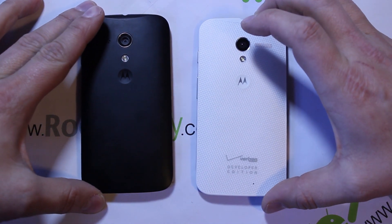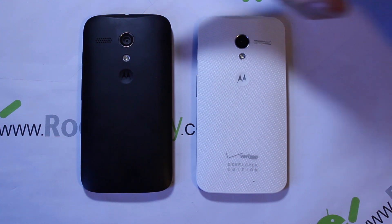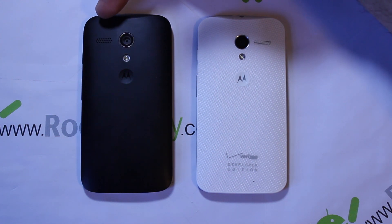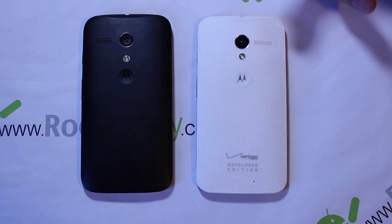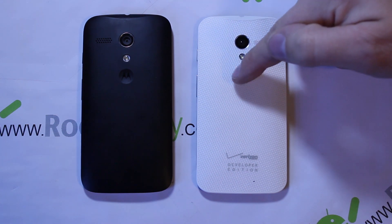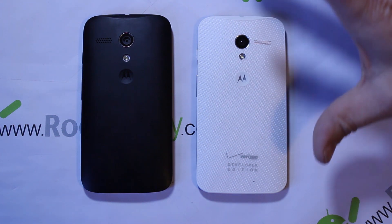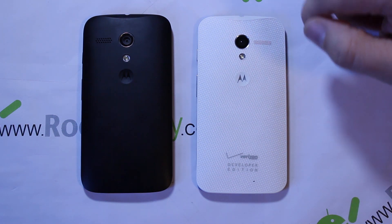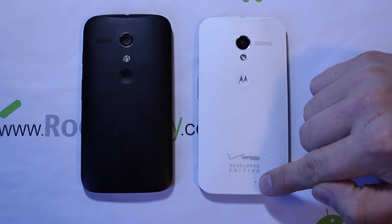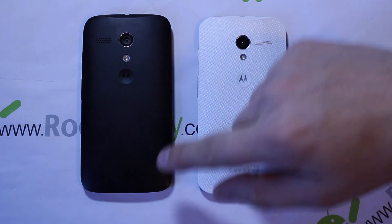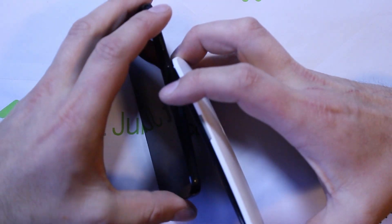On the back, there isn't a big difference either. The speaker is on the left on one and on the right on the other. They look like they have the same camera and flash, and both have the little dimple for the Motorola logo. I do notice there's an extra mic pickup on the Moto X that the Moto G does not have.